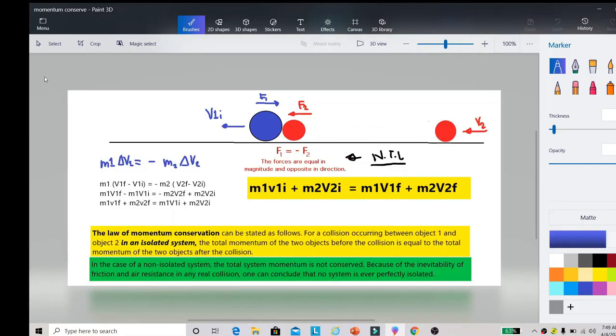Illustrate naman natin ngayon yung law of conservation of momentum. Suppose meron tayong dalawang bola. One is the blue ball that is situated here, and the other one is the red ball which is a smaller ball. Tawagin natin yung blue ball na ball 1 at yung red ball na ball 2. Initially, ang situation ni ball 2 is nandito sa extreme right, just for example. Ball 1 is going to the left with a velocity of v1. Ball 2, which is the red ball, is also going to the left with a velocity of v2.